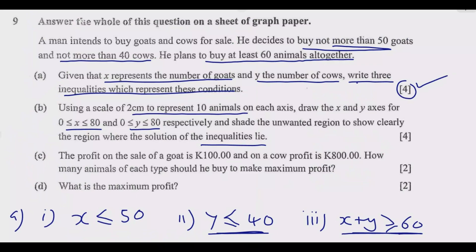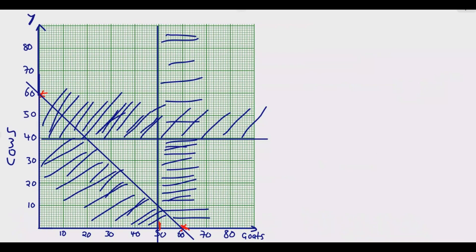So question C: The profit on the sale of a goat is 100 and on a cow profit is 800. How many animals of each type should he buy to make maximum profit? So from the information being given, the profit function is equal to 100x plus 800y. So what this tells me is for every one cattle he sells, he makes 800 kwacha. From goats it's 100 kwacha. So meaning selling cows is more profitable.